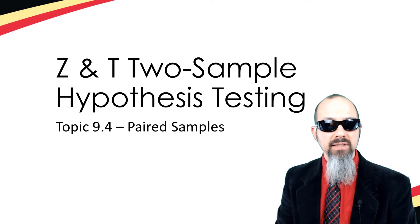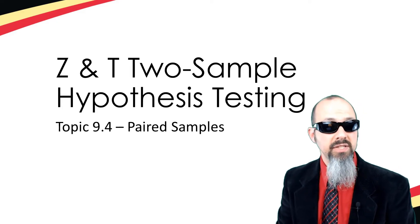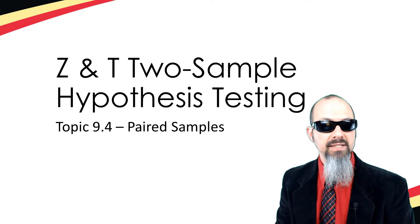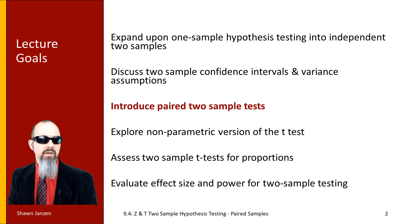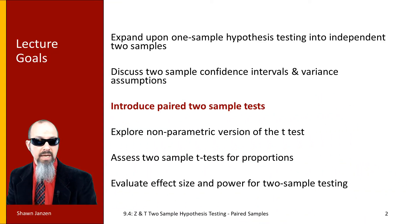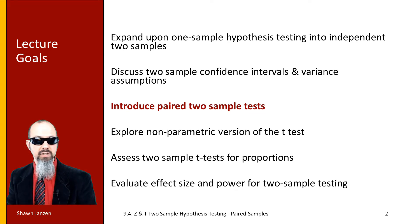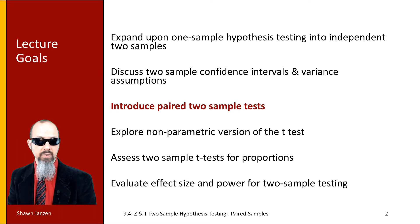Welcome back to ZNT two-sample hypothesis testing. In the previous videos we were focusing on independent samples and now we're going to take a slightly different tack into paired samples. In future videos we're going to talk about things like non-parametric versions, proportions, effect sizes, and powers. But for now let's recap what we've talked about with the Z's and T's.